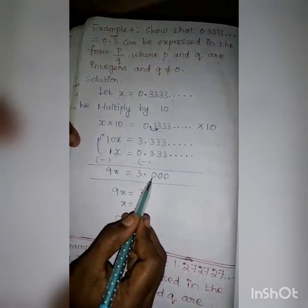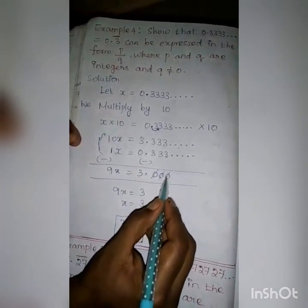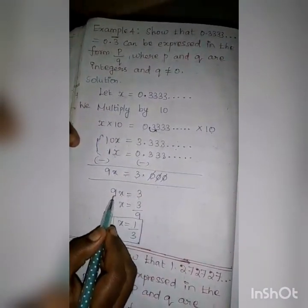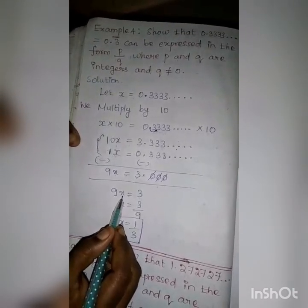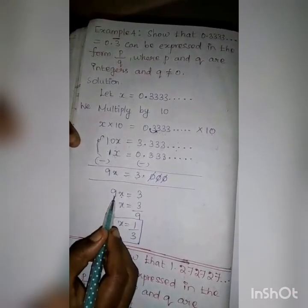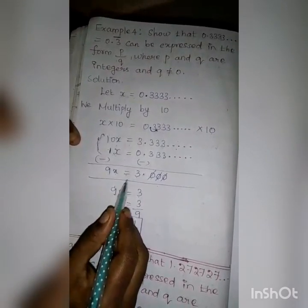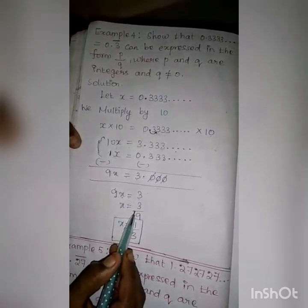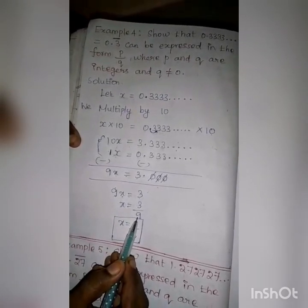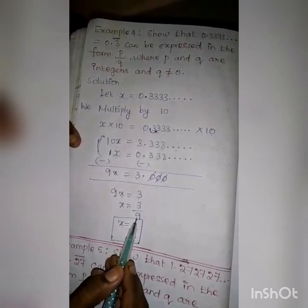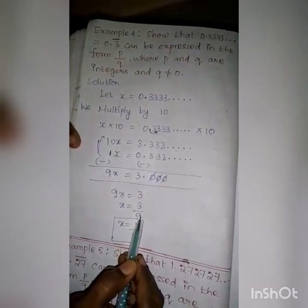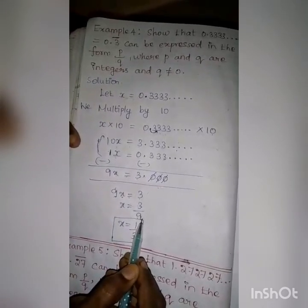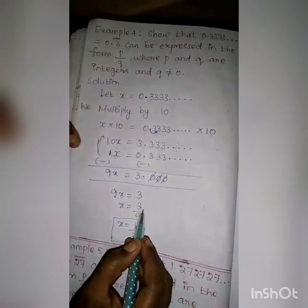The zeros after the point can be cut. So 9X is equal to 3. Now, 9 into X means multiply, so transposing 9 to the other side it becomes divide. So X is equal to 3 divided by 9. For numerator and denominator, 3 is common — 3 and 9 are both divisible by 3.